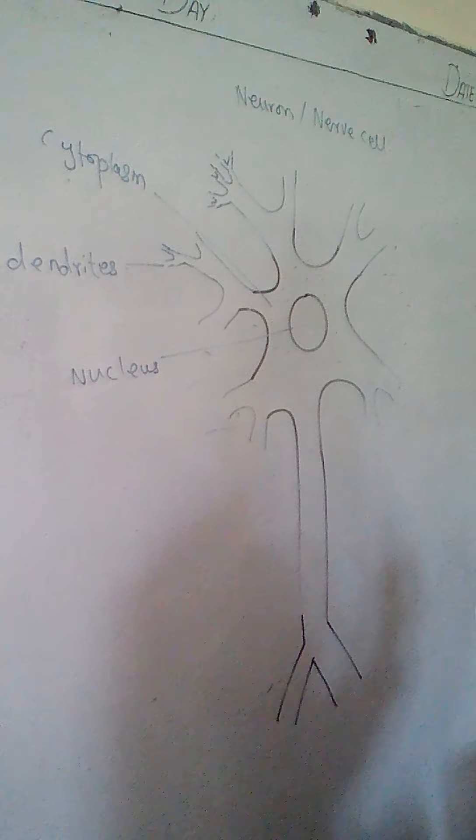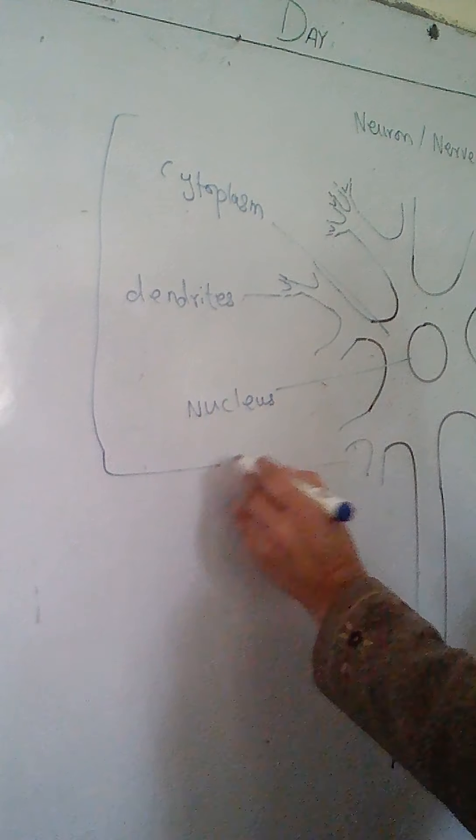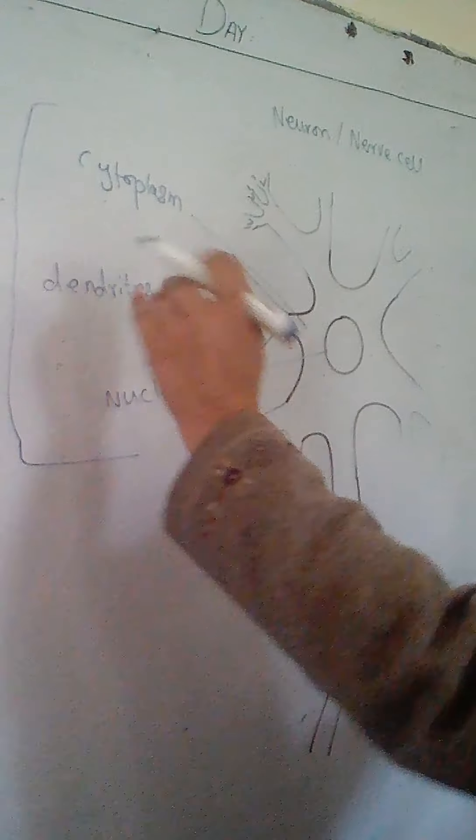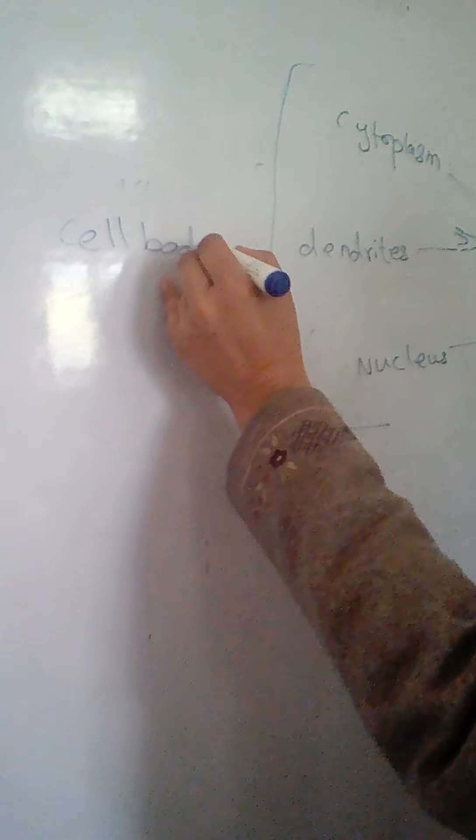So the whole body containing cytoplasm, nucleus, and dendrites, this is called the cell body.